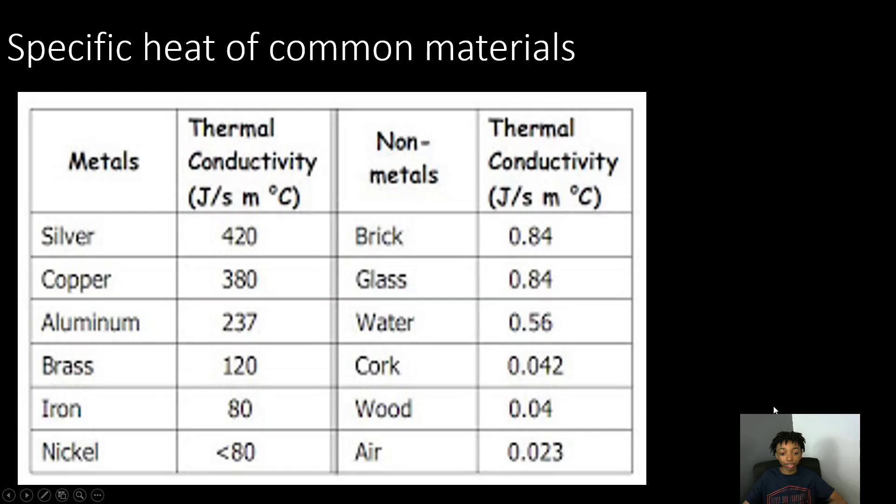Now let's move on to the specific heat for our non-metals. The lowest specific heat for our non-metals is going to be air with a specific heat of 0.023. Now let's move on to the highest specific heat for our non-metals, which is going to be brick. This is why most people prefer brick houses over wood houses, because it takes a lot longer for brick houses to get warm because they have a high specific heat. The specific heat for brick is going to be 0.84.